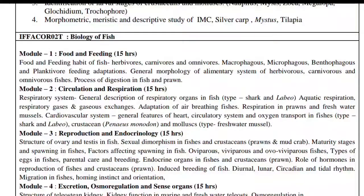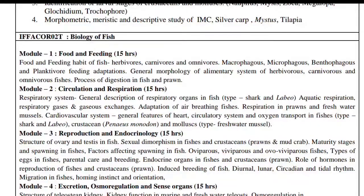Food and feeding habits of fish include herbivorous, carnivorous and omnivorous types. Also covered: macrophagous, microphagous and benthophagous feeding, planktivores, feeding adaptations, and general morphology of the alimentary system of herbivorous, carnivorous and omnivorous species, including the process of digestion in fish and prawns.